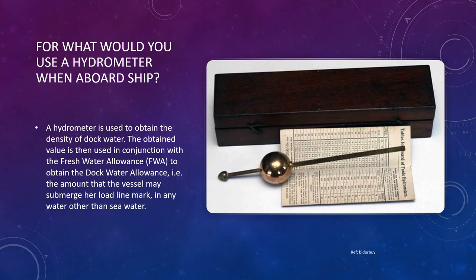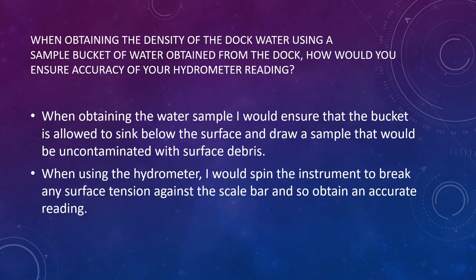The dock water allowance is the amount that the vessel may submerge her load line mark in any water other than salt water, and vice versa. You suspend the hydrometer in the water. The sphere and the bottom arrangement allow it to float in a bucket of water. The hydrometer sinks or rises to the level corresponding to the water's density, and you read off the density from the markings on the longer scale.